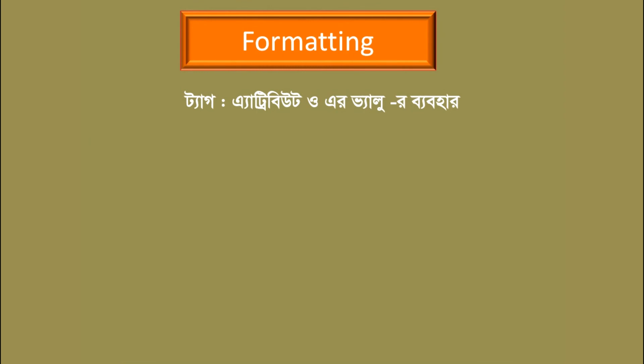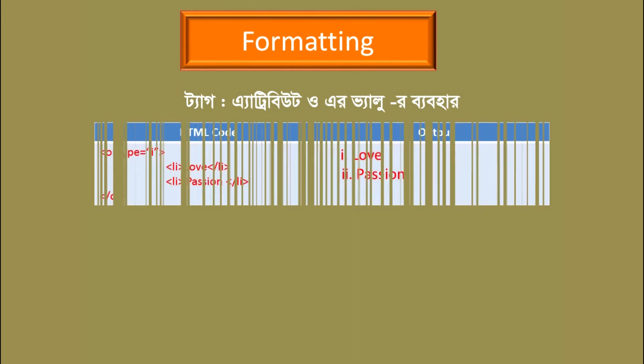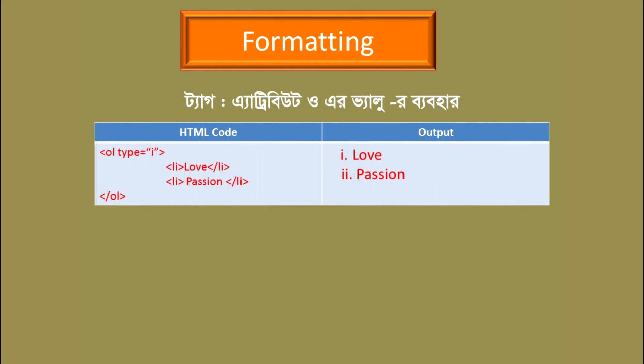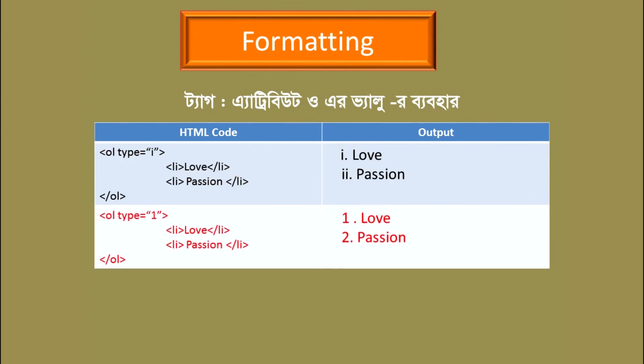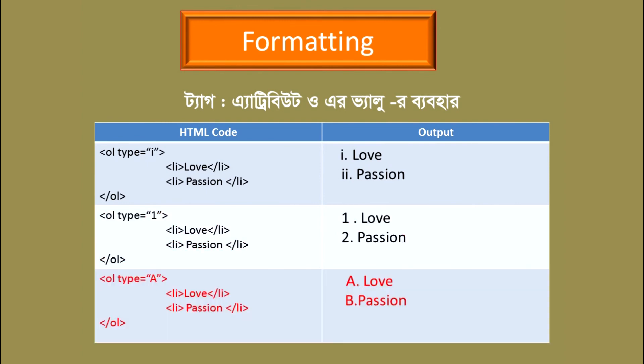The ordered list type can be set to Roman numerals. The automatic output is 1, 2, 3. The ordered list with Roman type gives numerical Roman output. The same applies to capital or small letter types.